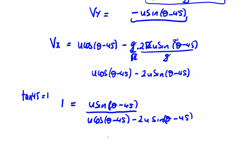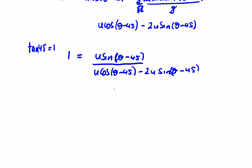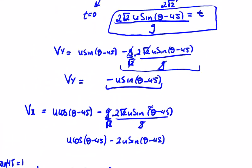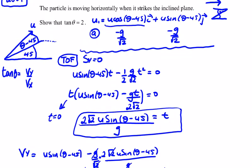Tidying this up and setting the numerator equal to the denominator: u cos(θ-45) minus 2·u sin(θ-45) = u sin(θ-45). Dividing through by u and rearranging gives cos(θ-45) = 3 sin(θ-45), so sin over cos equals 1 over 3, meaning tan(θ-45) = 1/3.